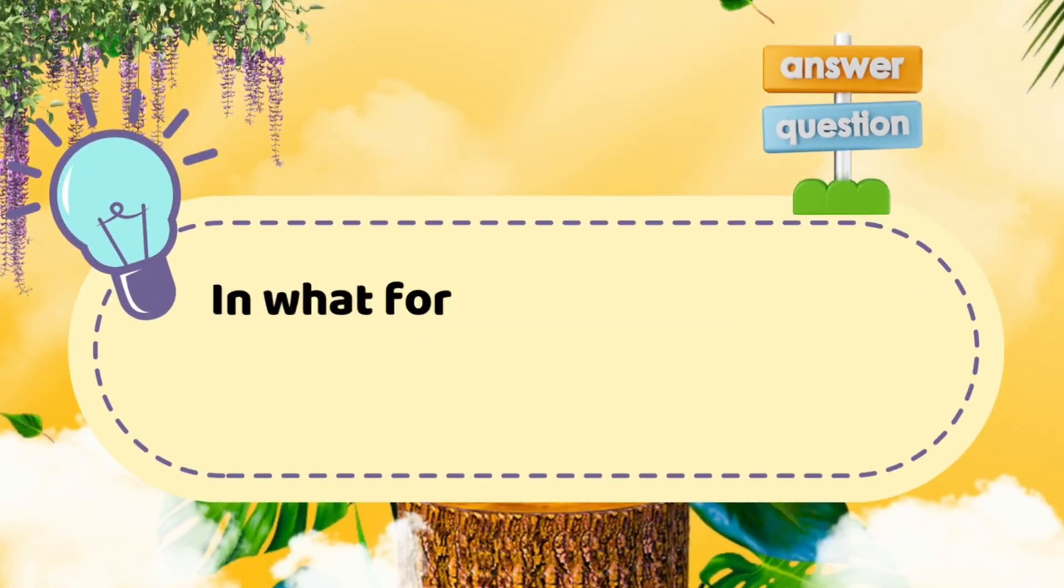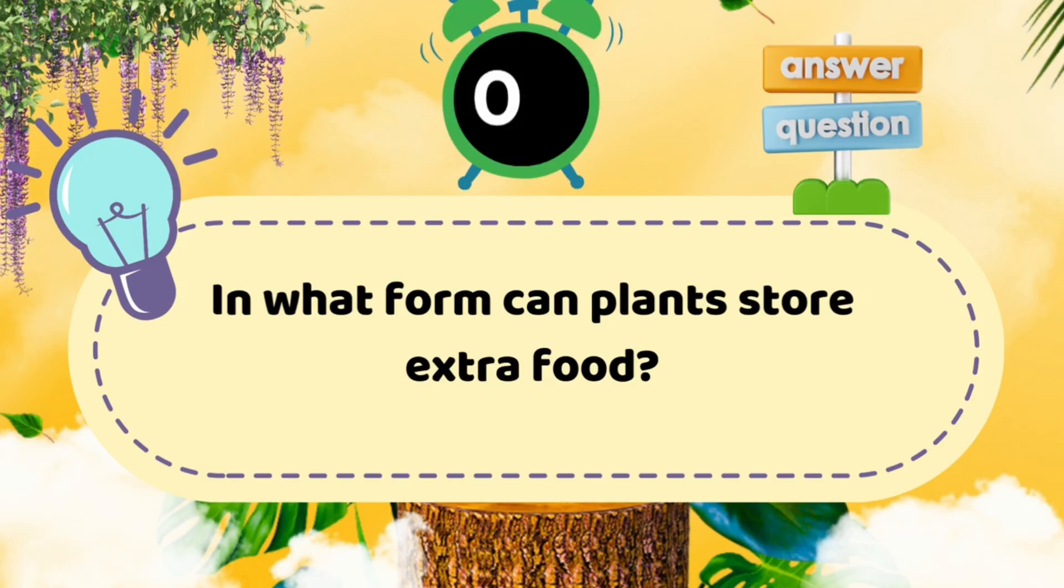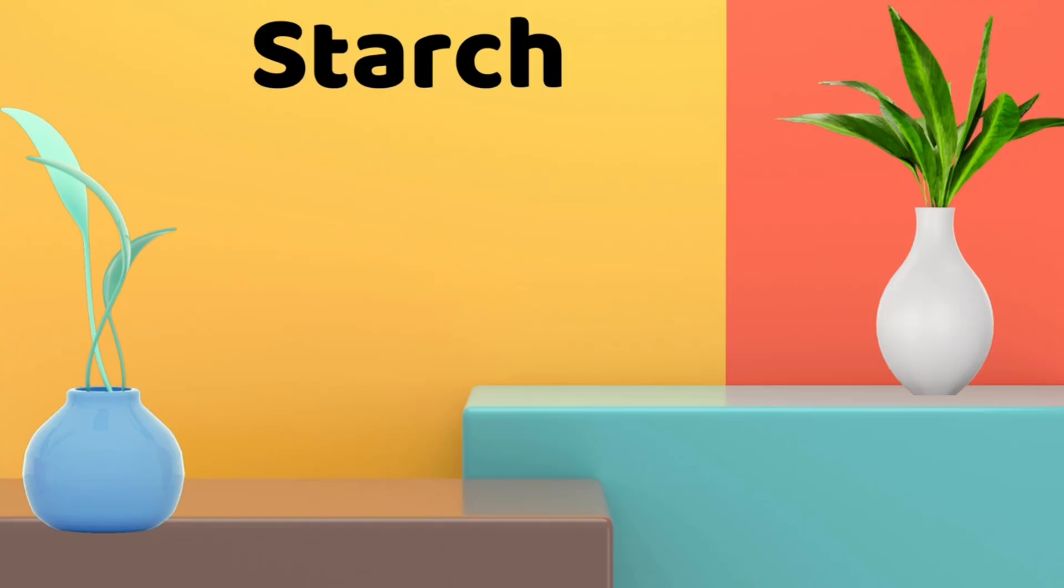Question six: In what form can plants store extra food? Answer: starch. Fantastic, you nailed it again.